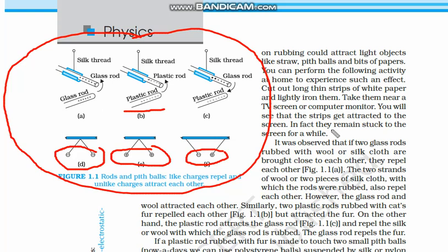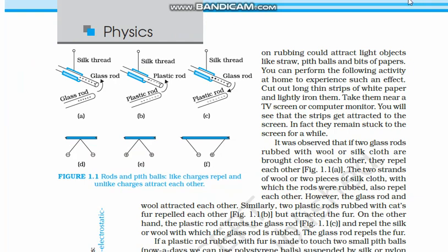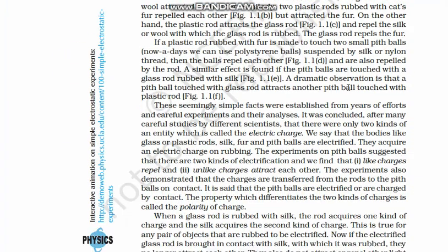There can only be two types of charges: similar charges repel and opposite charges attract. We will name these positive and negative. Note these things down, and the question part has been explained.